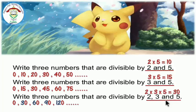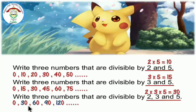We will write multiples of 30, which are multiples of 2, 3, and 5 at the same time: 0, 30, 60, 90, 120, and so on — each time we jump by 30. You can write any 3 numbers you want.